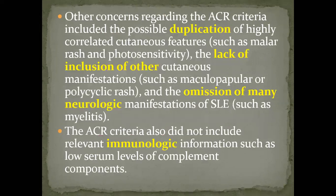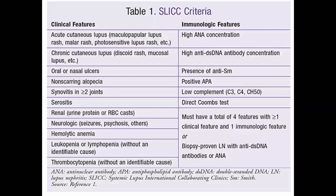Additional limitations included lack of inclusion of other neurologic affections — especially transverse myelitis — and absence of complement consumption as a criterion. Many patients with transverse myelitis were eventually diagnosed with SLE, but complement consumption, which is very common in lupus, was absent from the ACR criteria.